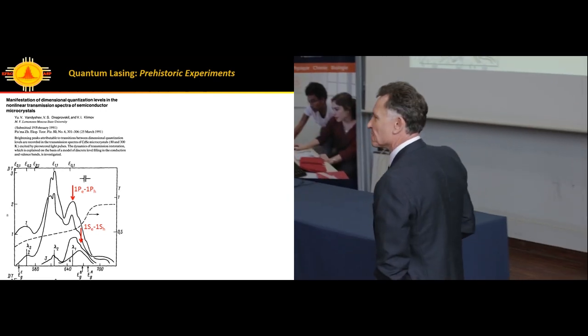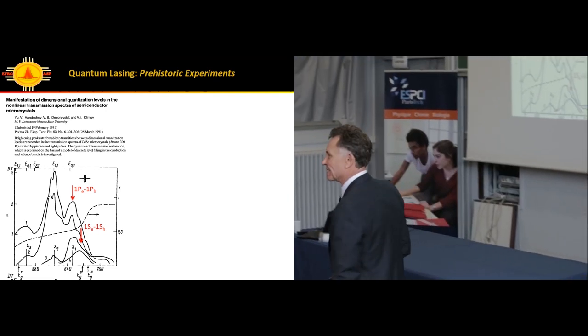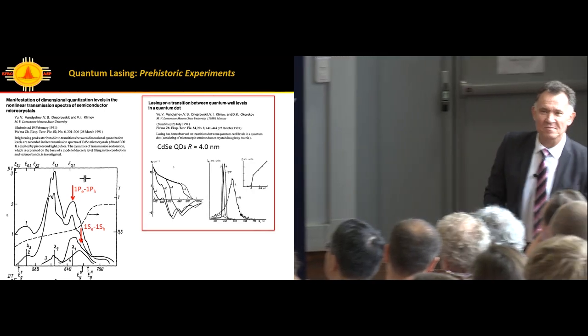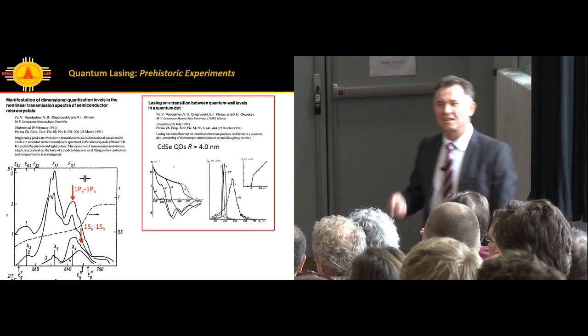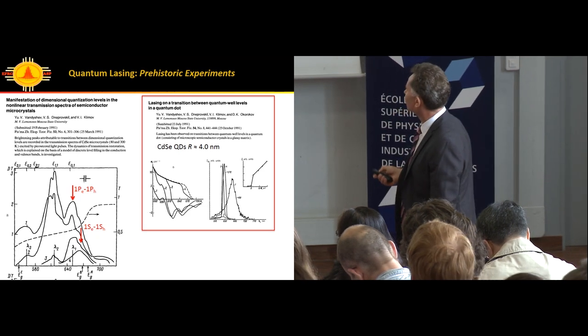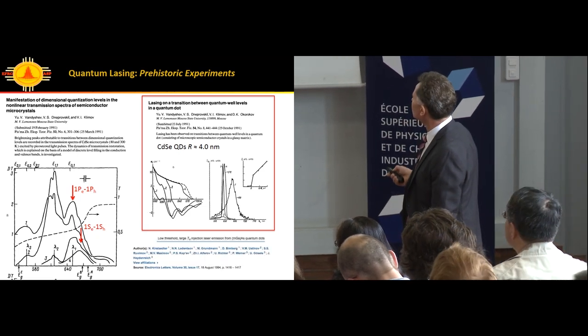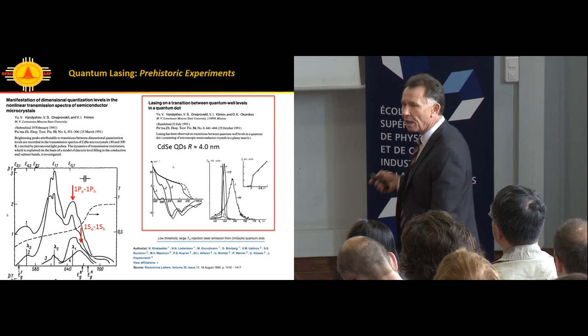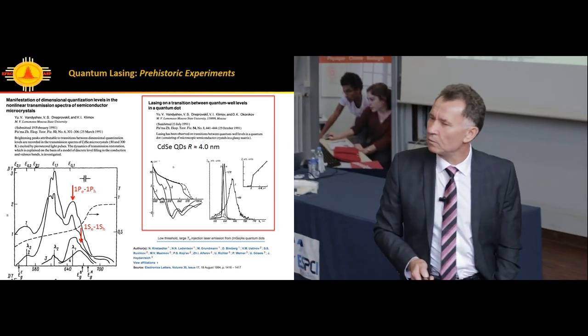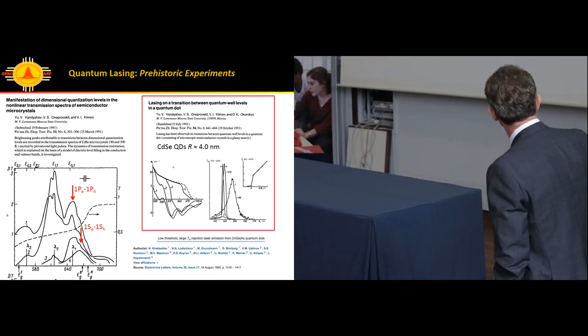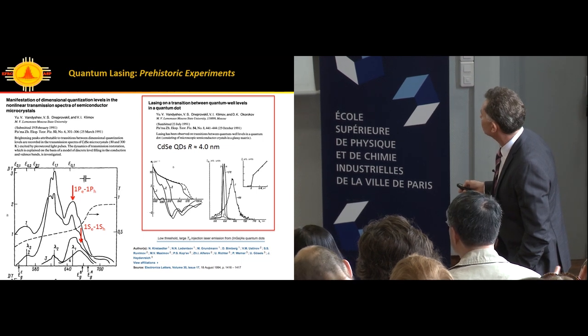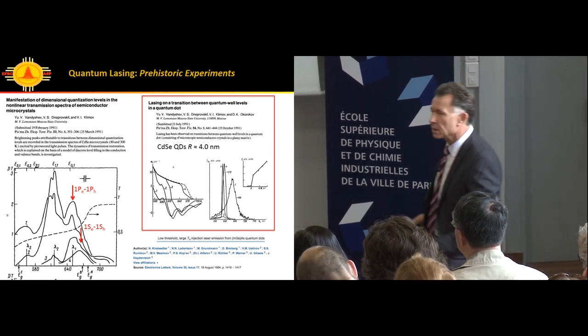Was it the first observation of quantum dot lasing? Must be honest. We did that back in 91 in Russia. Maybe we didn't understand all the details of the physics. We saw lasing. But we realized in some samples, the bleaching was so large that it resulted in negative excited absorption. We were looking at optical gain. It was optical gain feature, as we know now, associated with biexcitons.